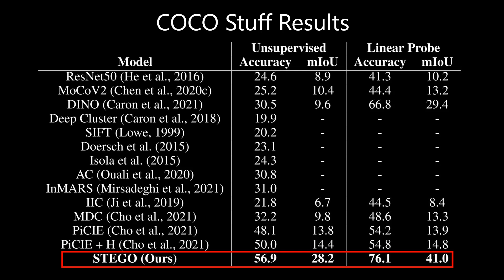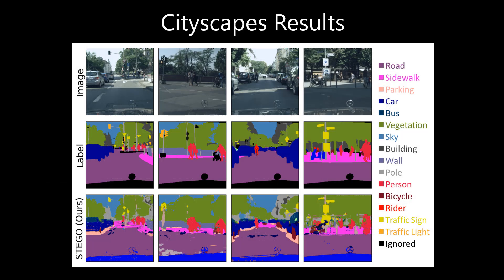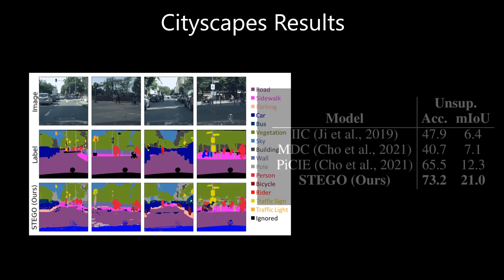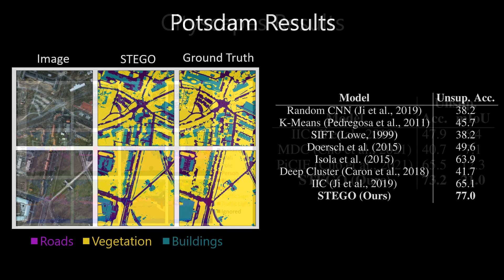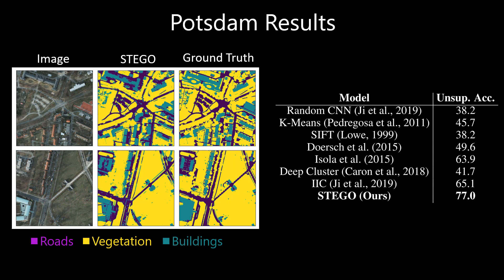Furthermore, Stego generalizes to a wide variety of different domains. Stego is able to accurately segment people, vehicles, roads, bicyclists, and traffic signs in the Cityscapes dataset, and yields a similar doubling of mean intersection over union. On the Potsdam 3 Aerial Segmentation Challenge, Stego is able to accurately detect roads, buildings, and vegetation with an increase of 12 points of accuracy compared to prior state-of-the-art methods.